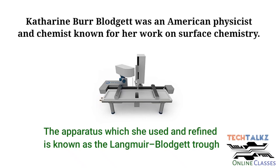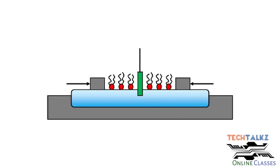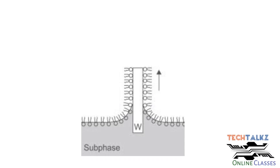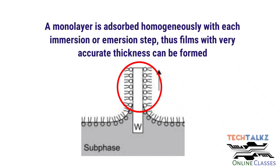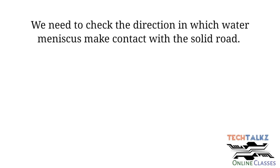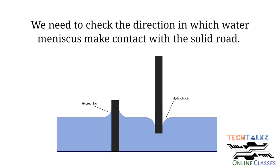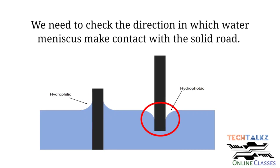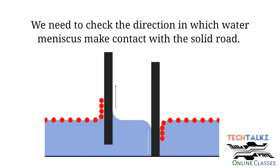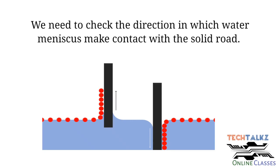Blodgett observed that when a glass rod is dipped at the desired surface pressure, a Langmuir film is formed on it. She detected the deposition of monolayers onto the rod — this transfer of Langmuir monolayers onto the solid glass rod is the basic working principle of LB filmmaking. In LB filmmaking, we need to check the direction in which the water meniscus makes contact with the solid rod, and whether the rod is hydrophilic or hydrophobic. Successful transfer of monolayers from the air-water interface onto the solid substrate occurs by passing the rod through the interface in the correct direction.